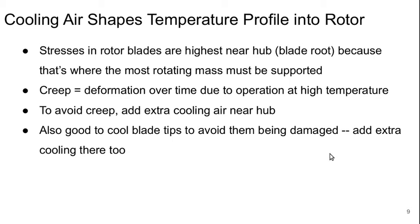The cooling air shapes the temperature profile going into the rotor. Stresses in the rotor blades are highest near the hub at the blade root because of centrifugal stress — this is where most of the rotating mass has to be supported. Creep, a deformation over time due to operation at high temperature in metals, must be avoided, so we add extra cooling air near the hub. It's also good to cool the blade tips to prevent damage or erosion, so we add extra cooling there too. We typically end up with a radially non-uniform stagnation temperature profile going into the first rotor — cooler at the tip and hub, hotter in the middle.